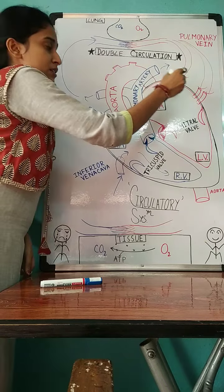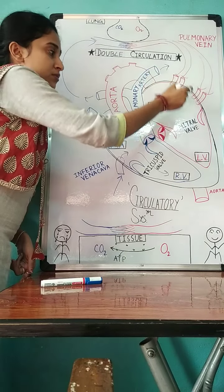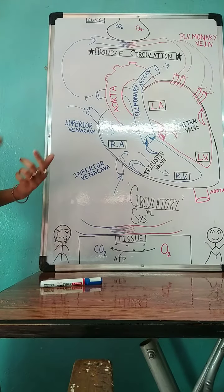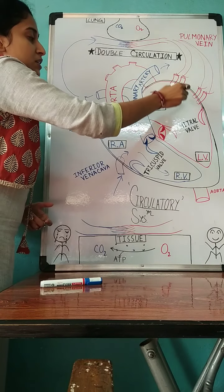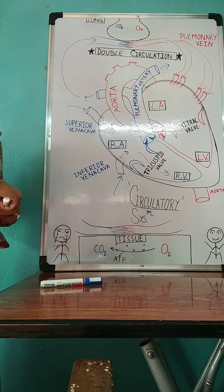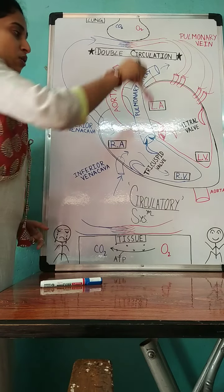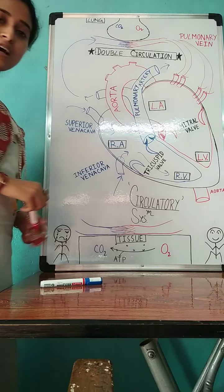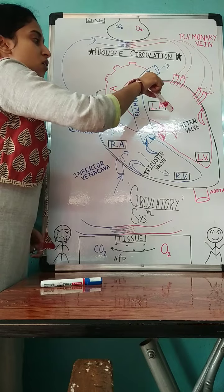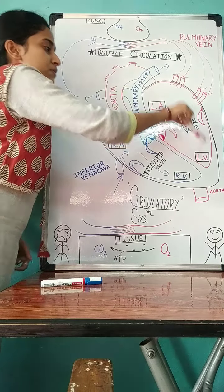Left atrium now relaxes and gets filled with oxygenated blood. When it gets filled totally, it starts to contract, opens the mitral valve and transfers the oxygenated blood to the left ventricle.